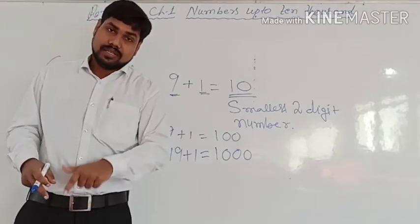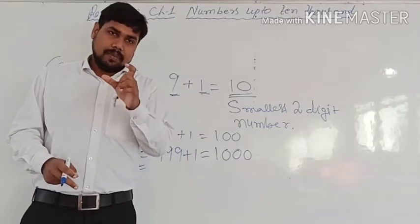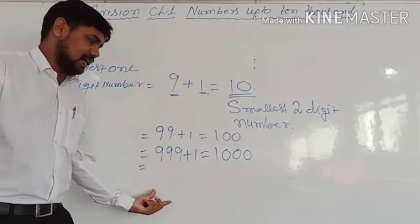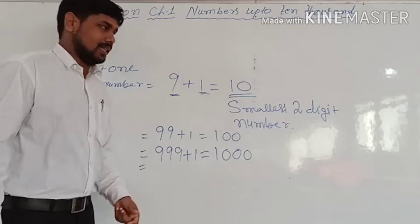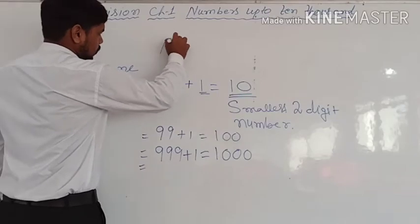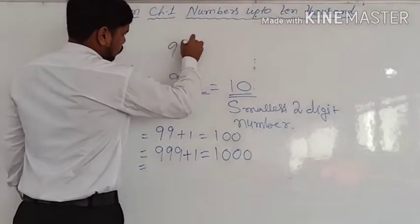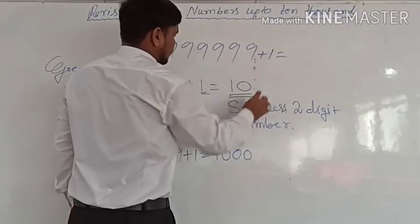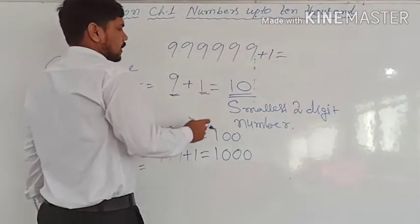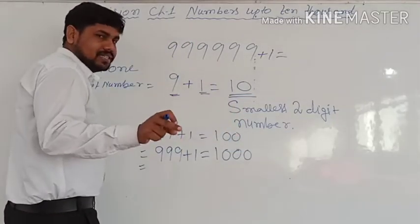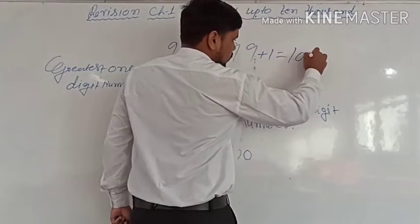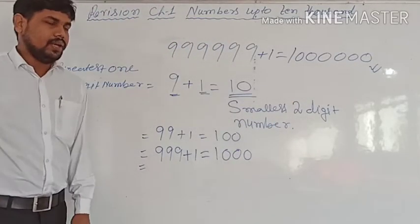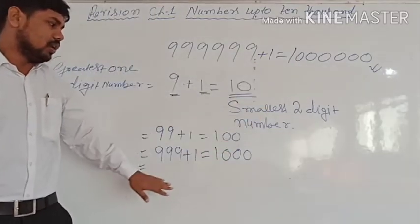The smallest six-digit number follows the same logic. If you have the greatest six-digit number — which has six 9s — and add 1, you get the smallest seven-digit number. The smallest seven-digit number is 1 followed by six zeros. So very simply, by adding 1 to the greatest n-digit number, you get the smallest (n+1)-digit number. This is all about exercise 1.1.